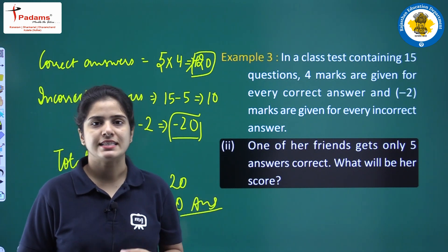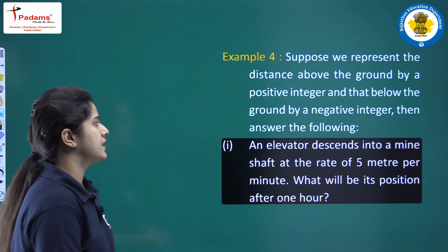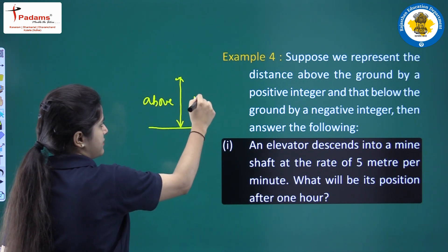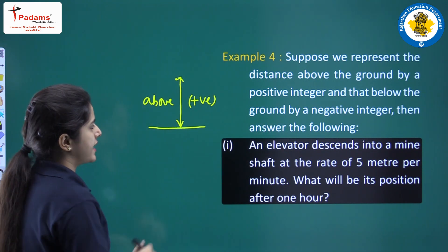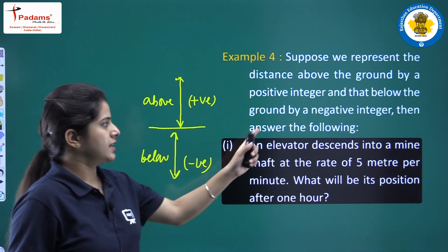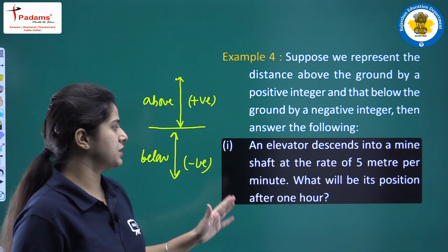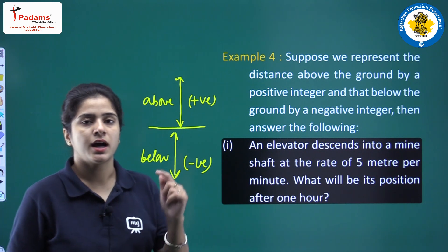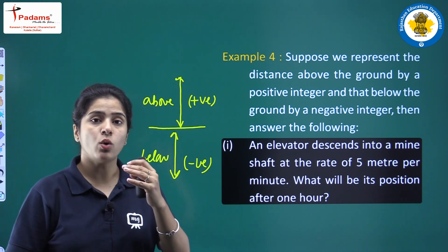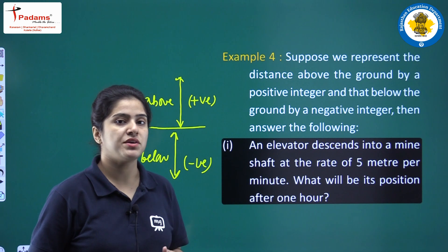Let us see the fourth question. Suppose we represent the distance above the ground by a positive integer and below the ground by a negative integer. An elevator descends into a mine shaft at the rate of 5 meters per minute. What will be its position after 1 hour? Descending means the elevator is going below the ground level at 5 meters per minute, and we need to find its final position after 1 hour.